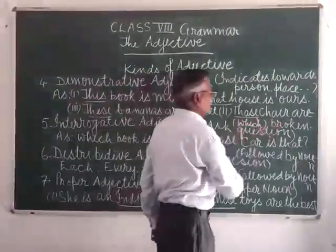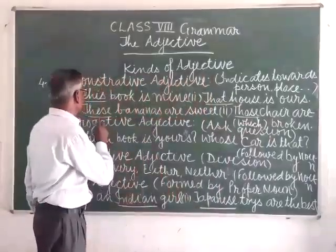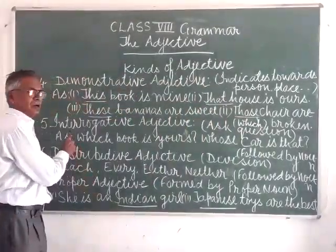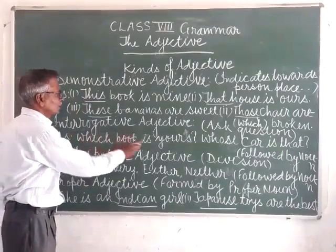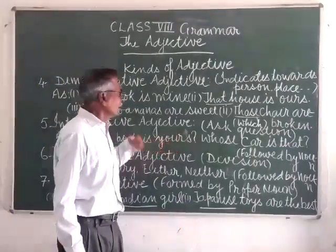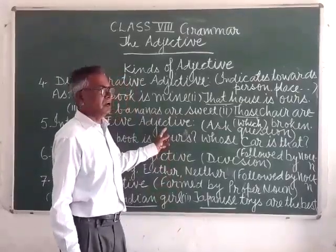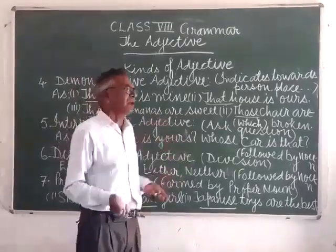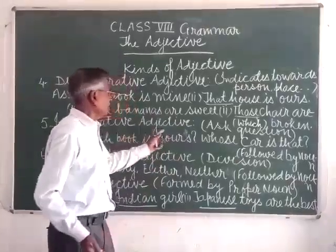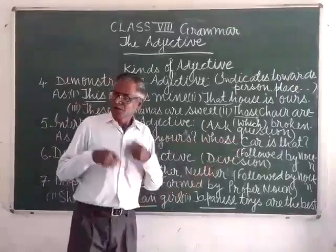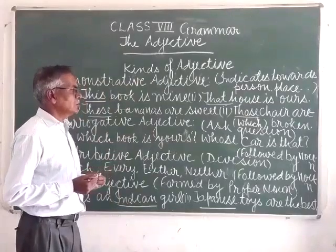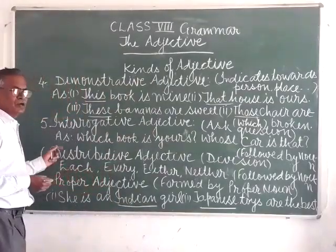Now we come to the fifth kind of adjective, that is the interrogative adjective. As the name itself suggests, the interrogative adjective denotes interrogation — it is used to ask a question. An interrogative adjective can be identified by the question words which and whose.